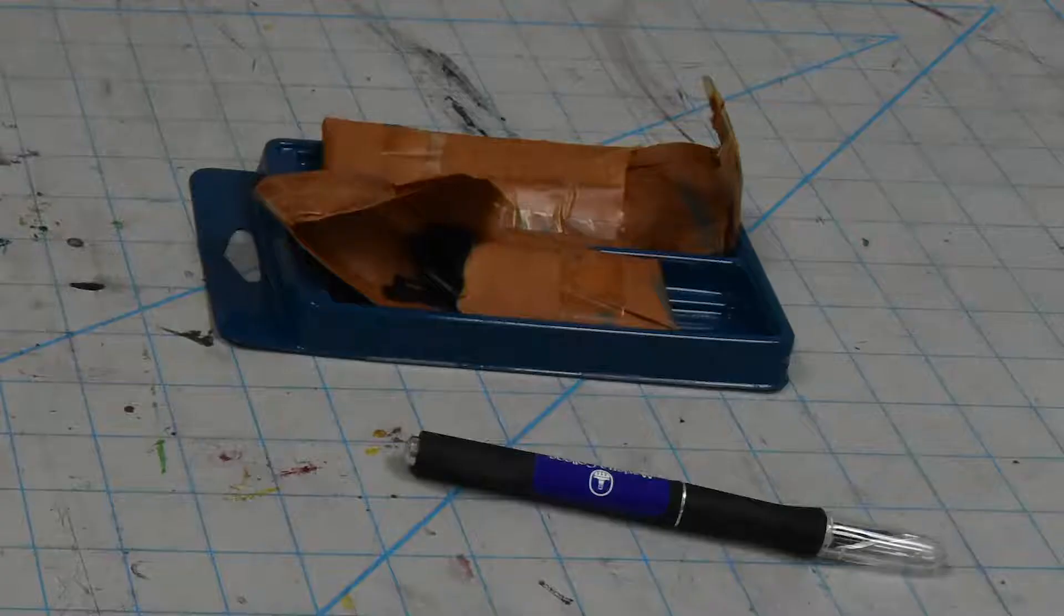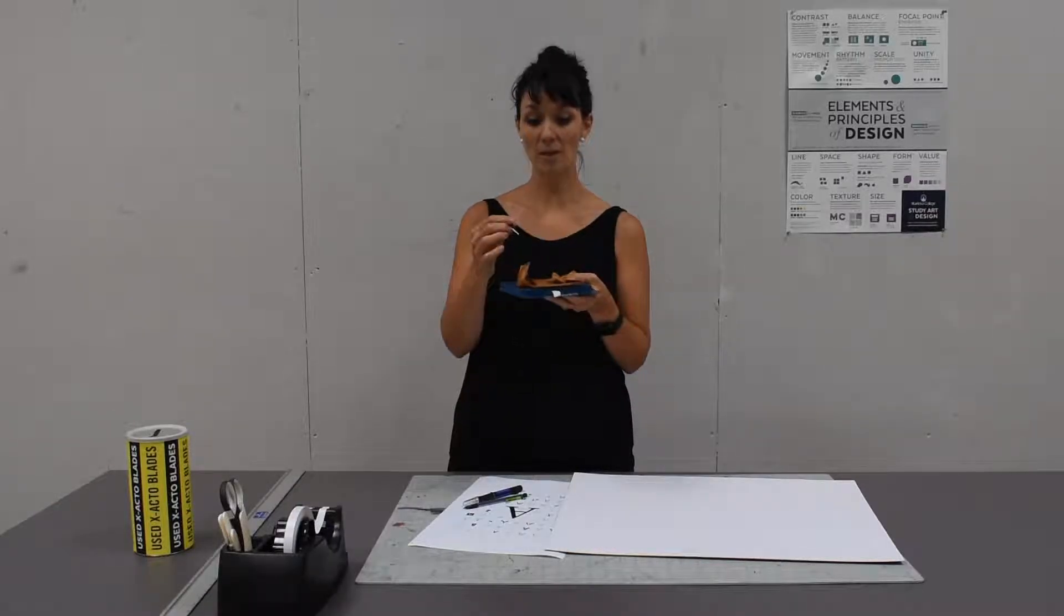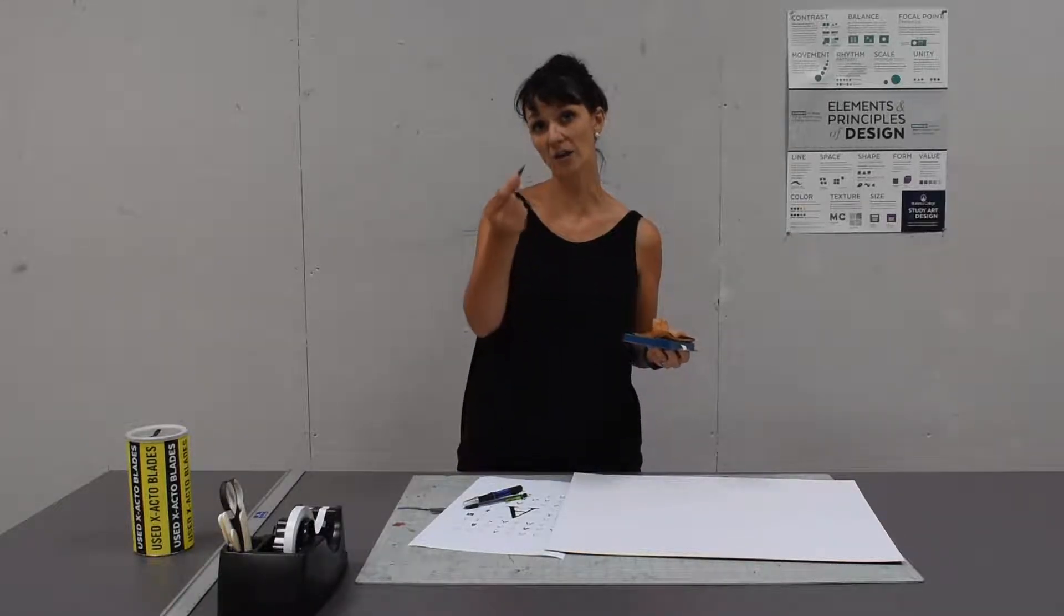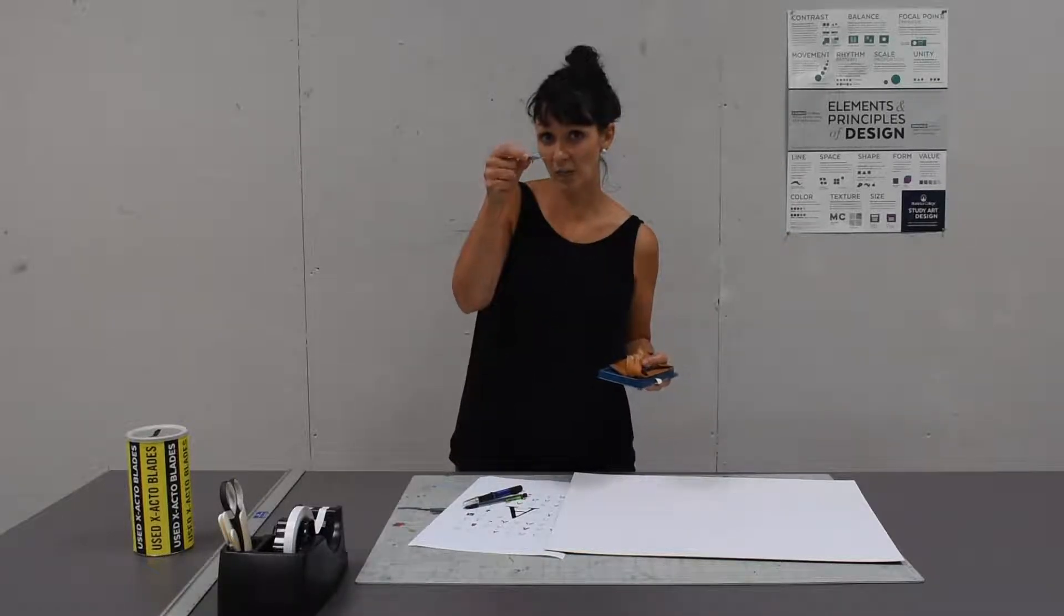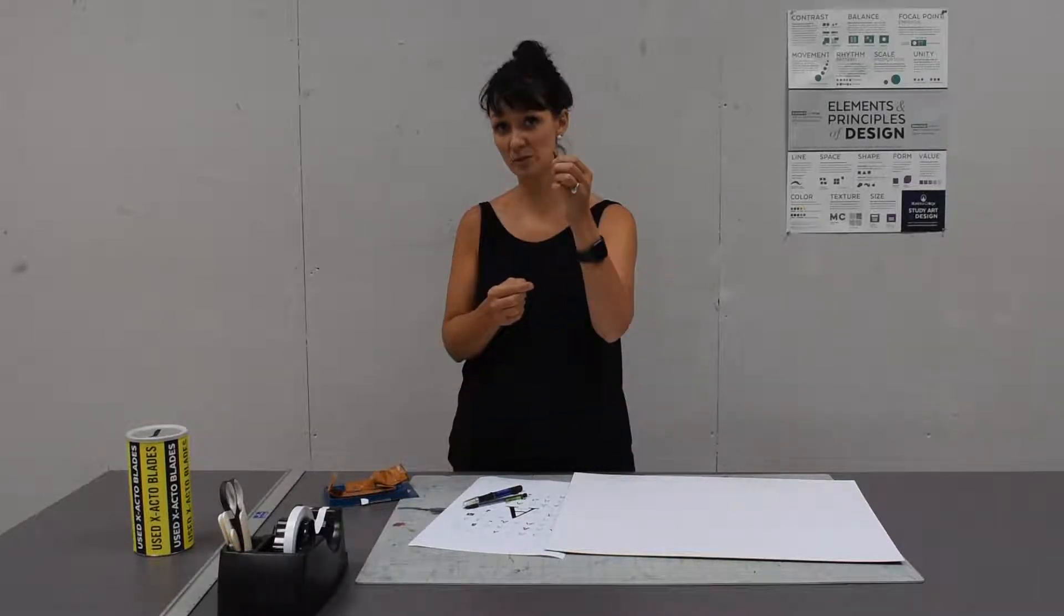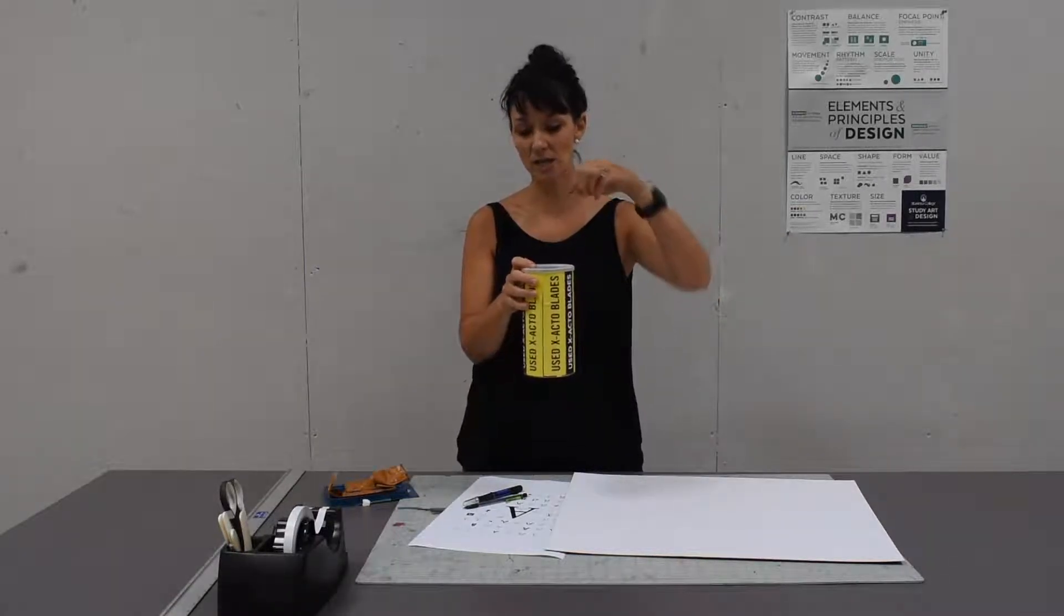You're going to need extra exacto blades. I realize this is a whole lot of exacto blades here, but you'll need at least a few extra. These are meant to only have a couple of good cuts. You might use one to two depending on what you're working on. These are meant to be disposable, which means you need to be prepared to dispose of them. I have a little container here for the used ones. But if you don't have something like this, you can put them in an envelope, tape it closed, and put it in the trash so it doesn't cut through the plastic bag and cut anyone.